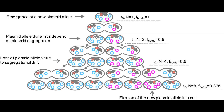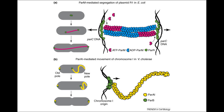One: motor proteins that generate the force for the movement of the chromosome. Two: a centromere-like binding site. And three: another protein that acts as an adapter, linking the aforementioned binding site to the force-generating protein. It is interesting to note that different plasmids use completely different sets of proteins, and there are several different partition systems known.